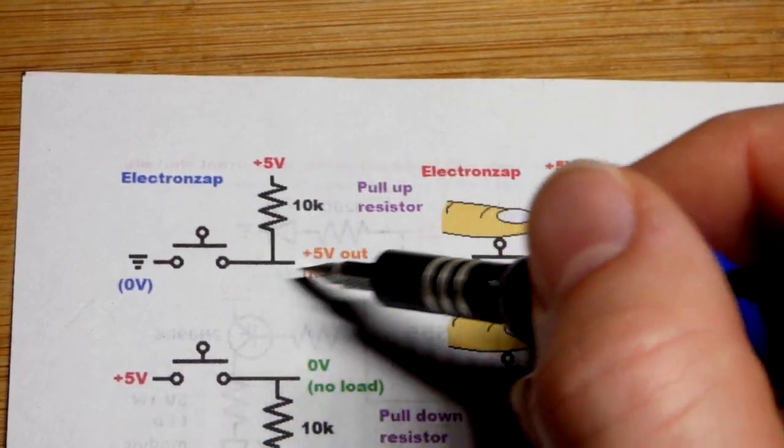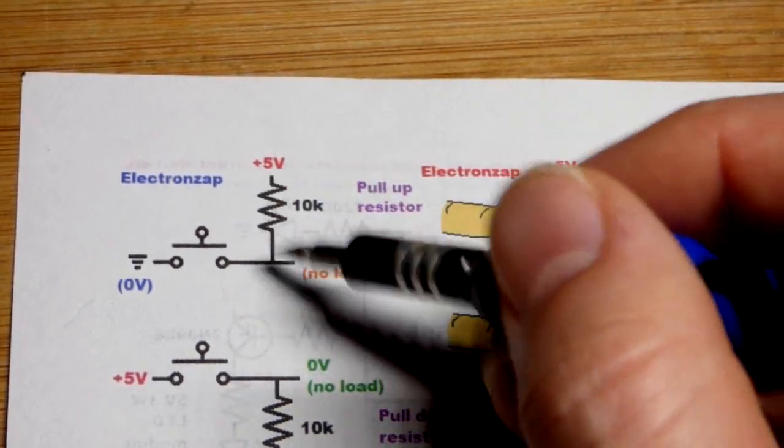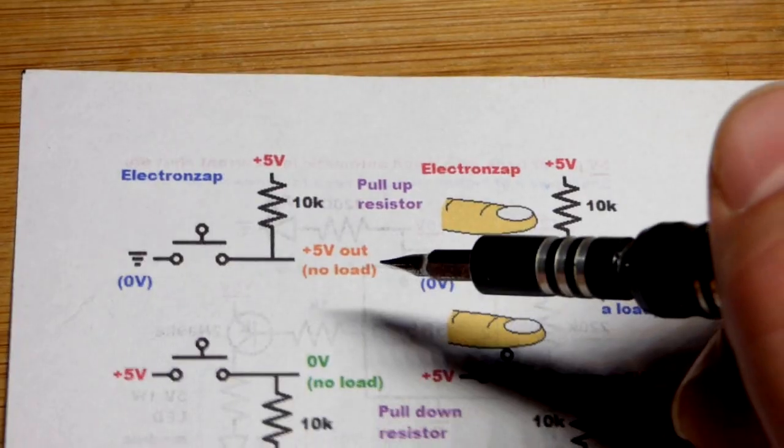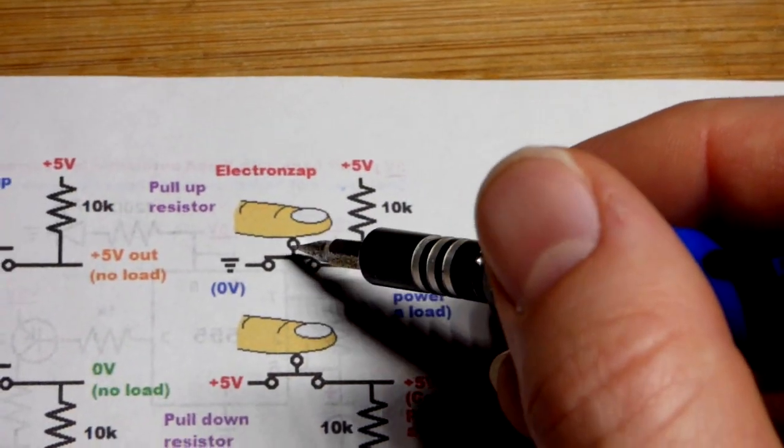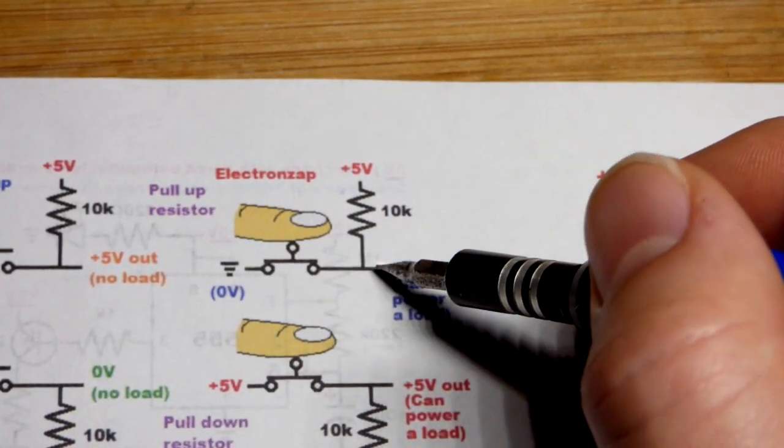It's in the open position right there when the output is 5 volts with a pull-up resistor. Now when you press the button, that makes a direct connection to ground right there.